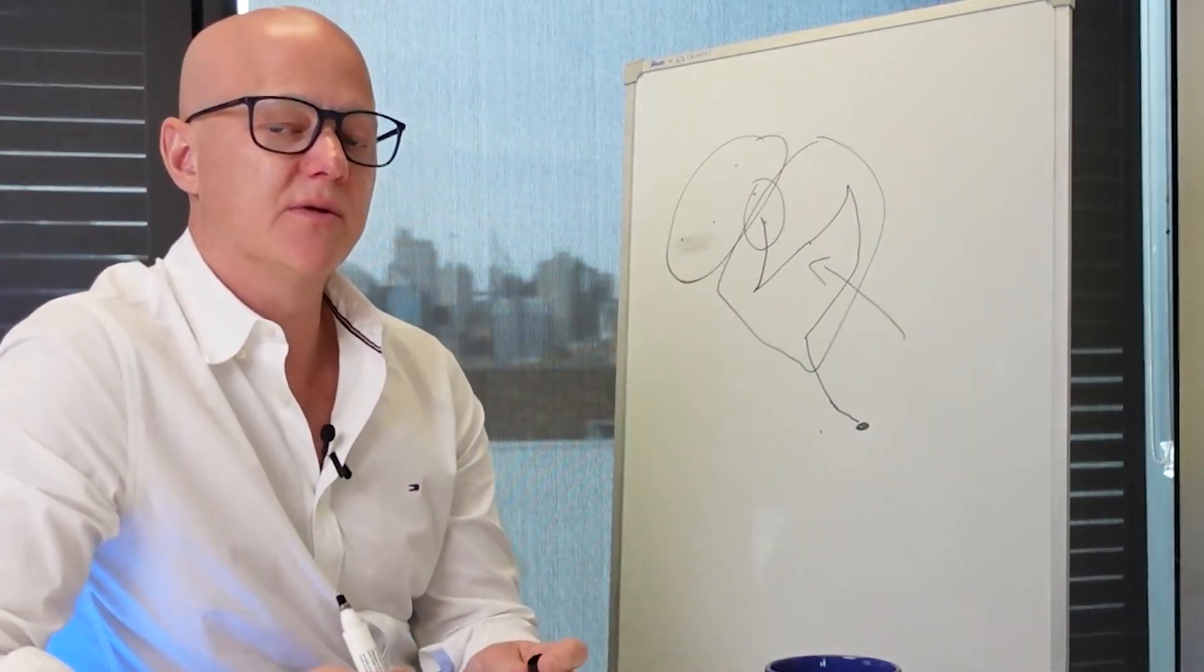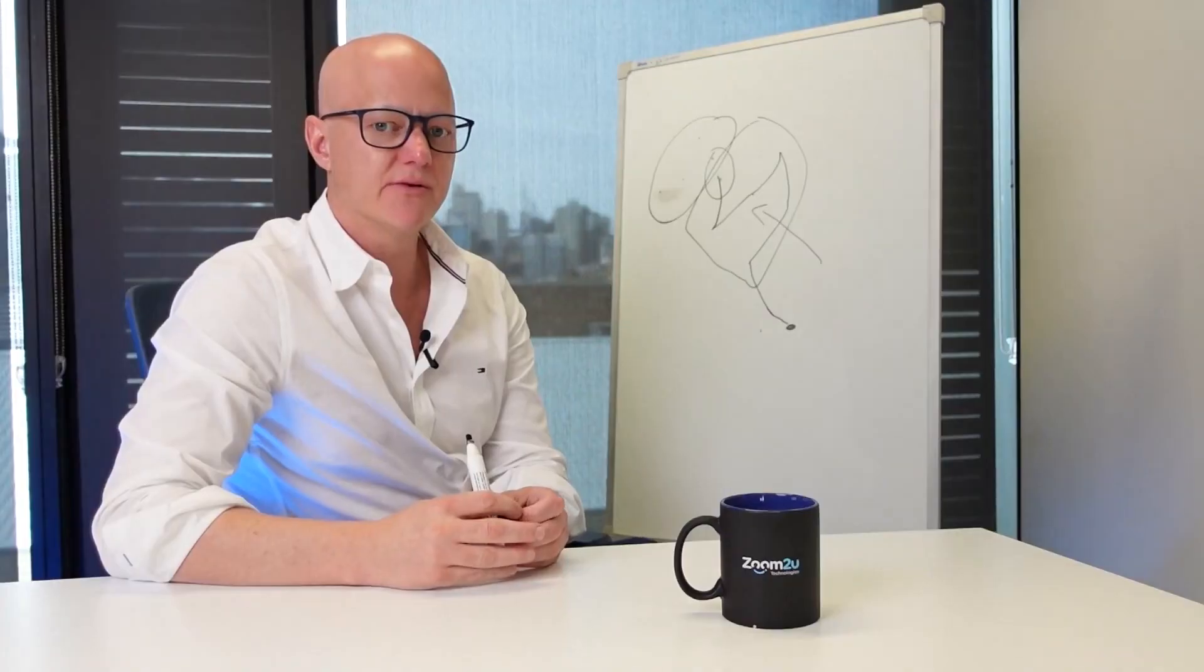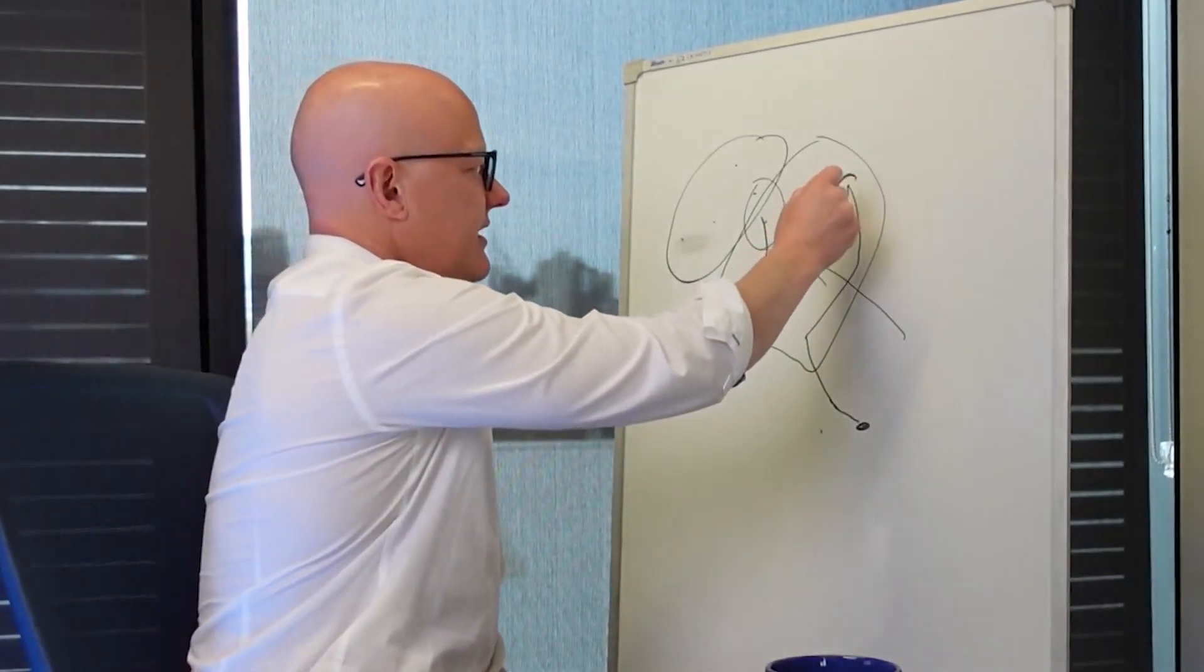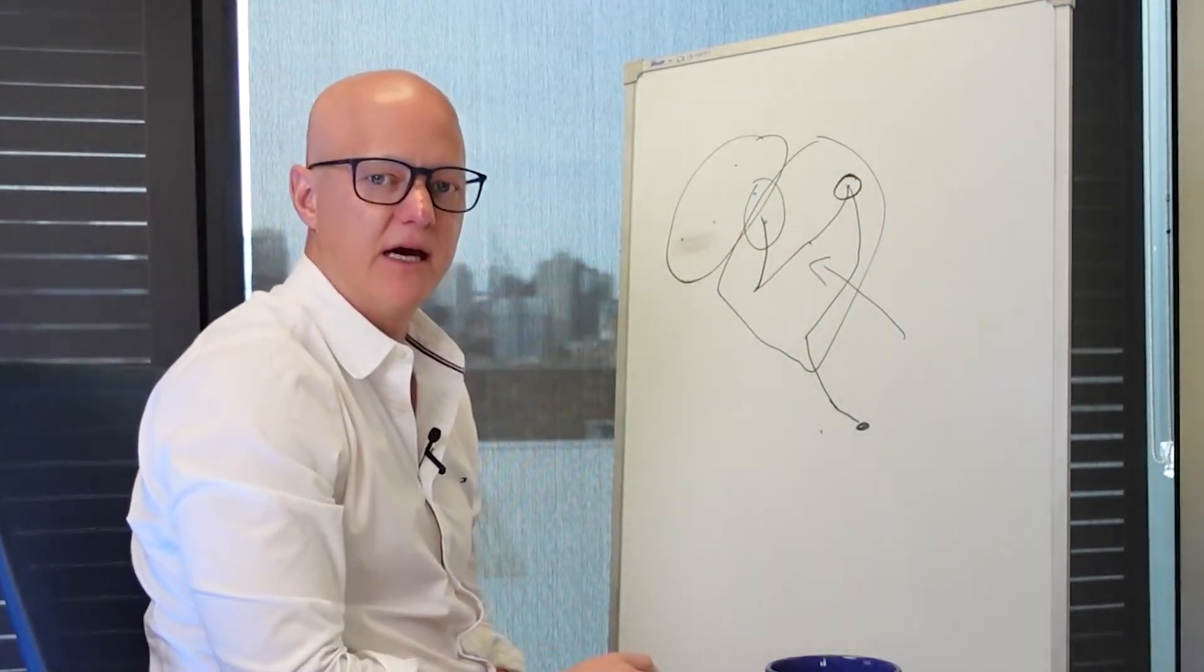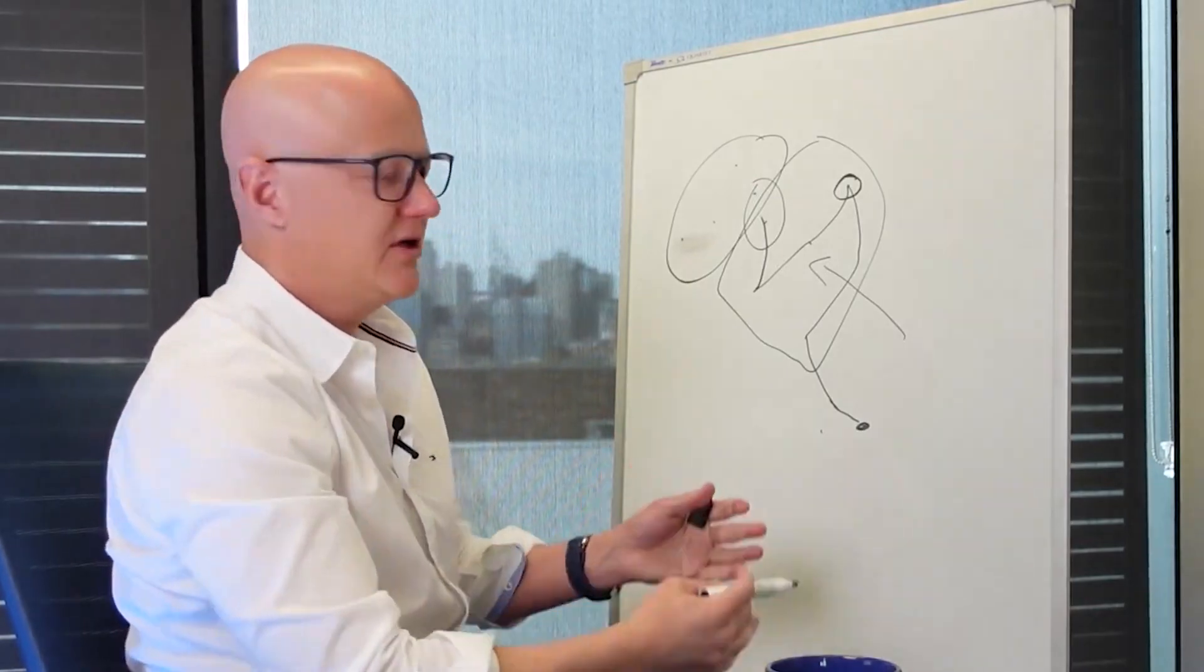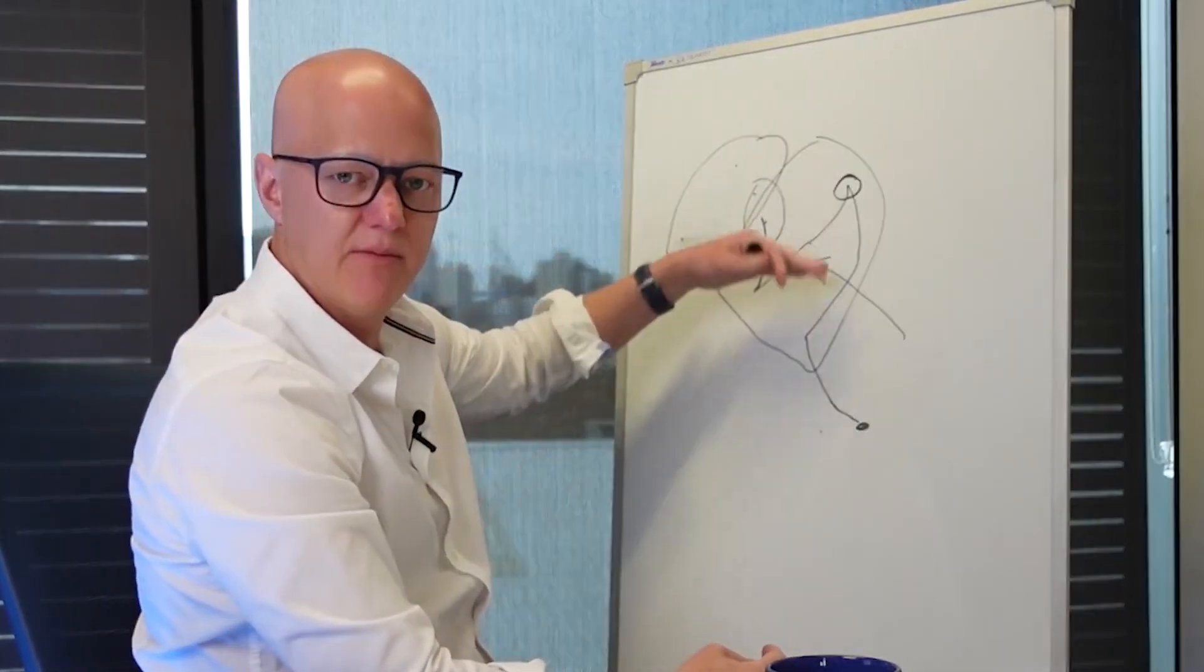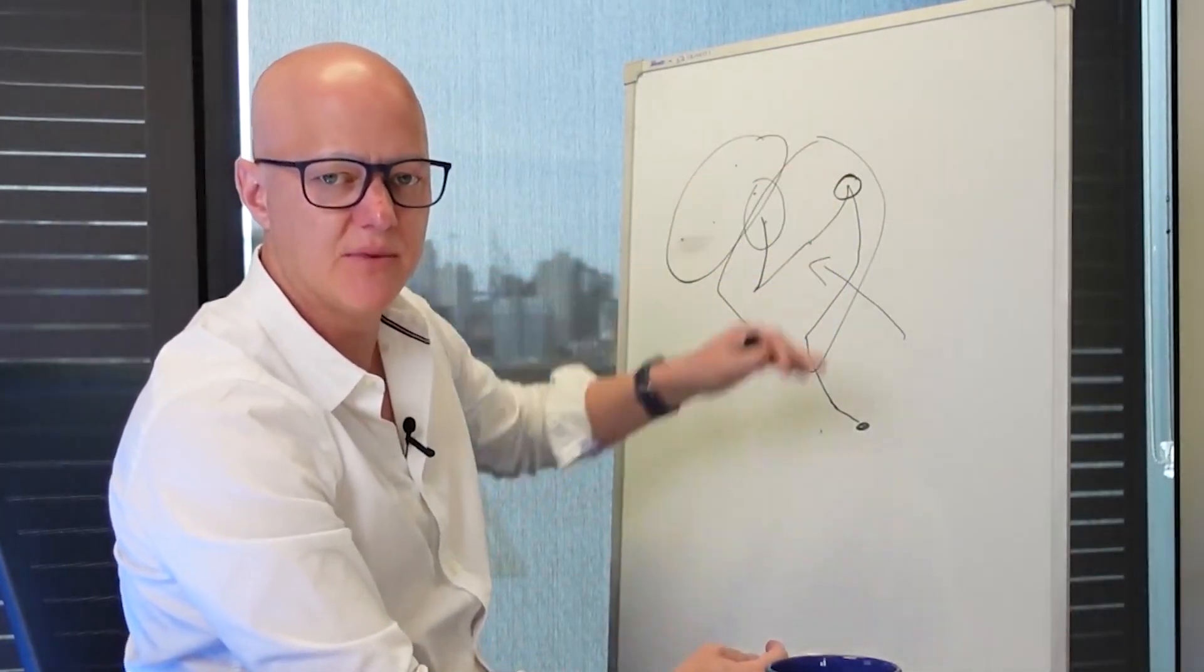What you can also do with route optimization is build in some rules. You might want to say for this particular delivery, I want to have this completed at 9am. That's just a rule you build into your algorithm, and the algorithm will figure out the order based on that particular rule.